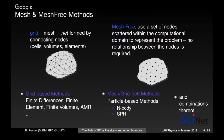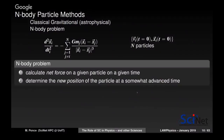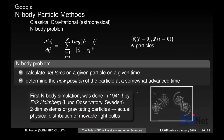Let me briefly review the N-body particle method. You're solving the classical gravitational N-body problem: the second derivative of positions with respect to time equals the sum of masses times the difference in positions divided by the distance squared. With N particles, you repeat this summation for each particle given initial conditions. The straightforward algorithm calculates the force on a given particle at a given time, then determines the new position at an advanced time step.